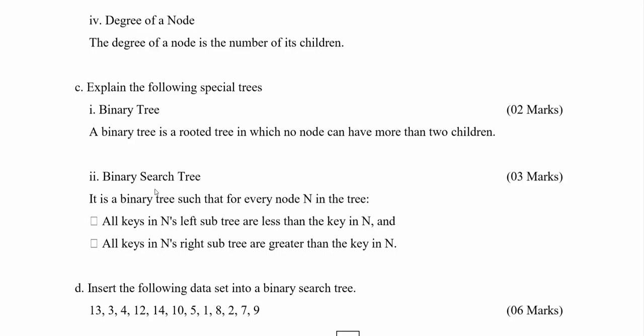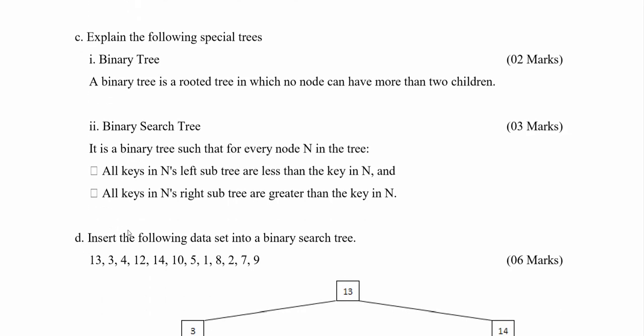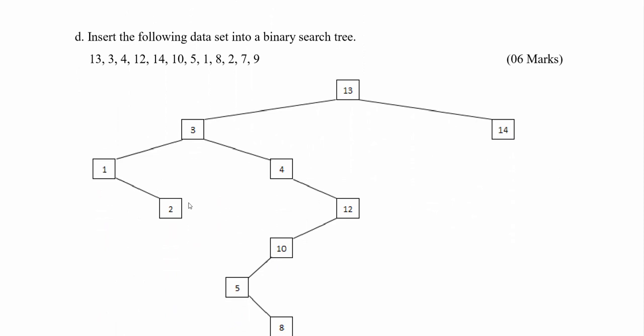For the binary search tree, similar to a binary tree, you can't have more than two children. But in addition to that condition, there are two things you have to consider: when you take the left subtree, the values or keys in that subtree are less than the node you consider; and when you take the right subtree of that node, the values are greater than that node's value. So for the binary search tree, clearly mention both the two-children condition and these two ordering conditions.